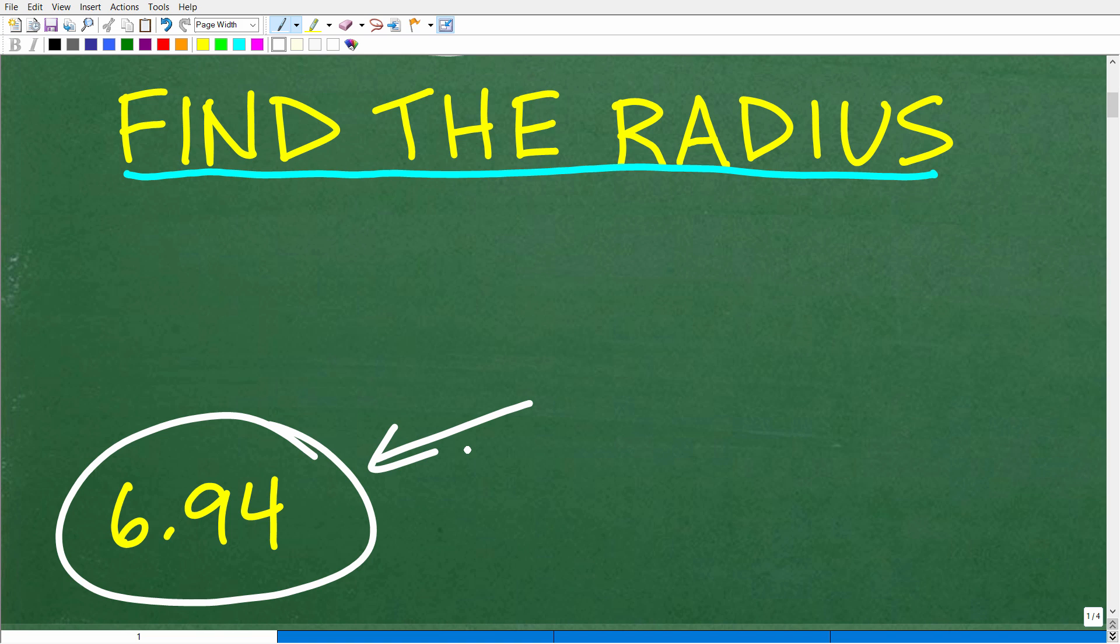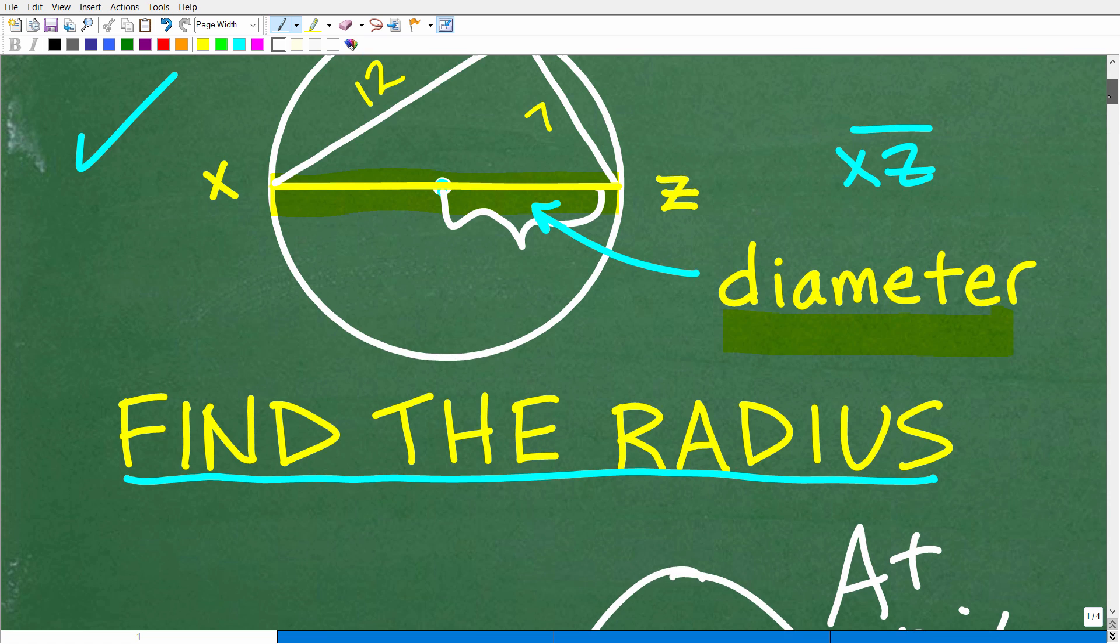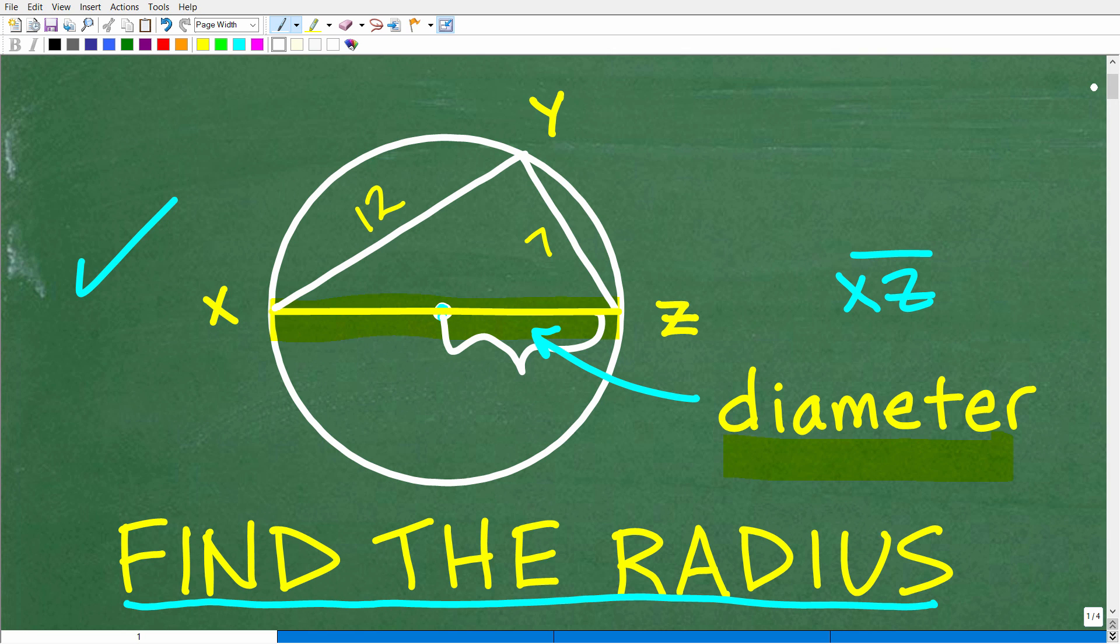So how did you do? If you got this right, that is fantastic. Matter of fact, I have to give you a nice happy face, an A plus, a 100%, and here's a few stars. You can brag to your friends and family that indeed you understand inscribed angles in circles. That's really what we're talking about here.